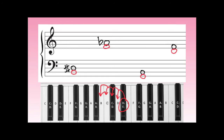Now let's count down from A-flat: one, two, three, four — it looks like an E, but we can't call it an E because we put it on the staff as an F. So what enharmonic of E has the letter name F? The answer is F-flat.